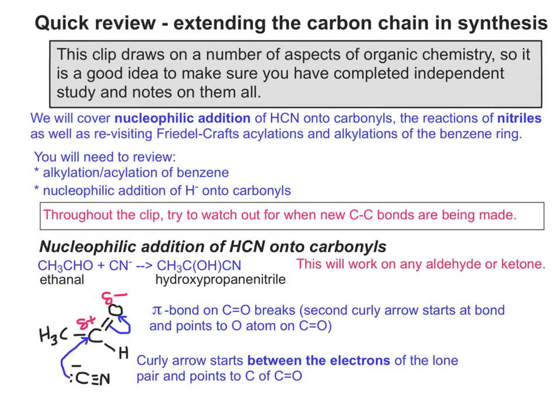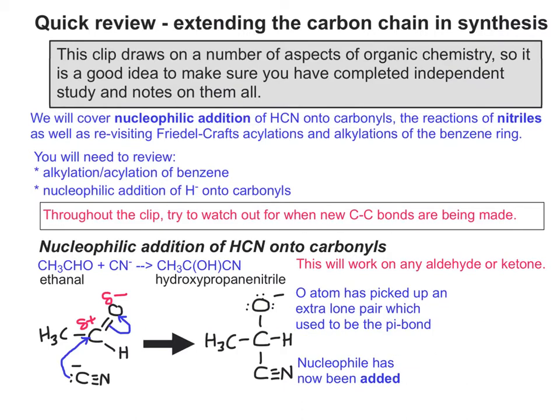That means the pi bond on the C=O can break, so the second curly arrow starts at that bond and points to the oxygen atom. In the intermediate formed, two things have happened: the nucleophile has been added, and the oxygen atom has picked up an extra lone pair of electrons — which used to be the pi bond — meaning the oxygen atom is now negatively charged.